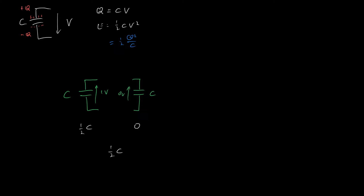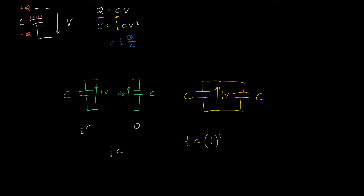Now imagine we bring these two capacitors together. The combined charge is still the same, but because we now have two capacitors sharing the same amount of charge, the voltage difference becomes half a volt. For the capacitor on the left, the energy is one half C times one half squared. For the capacitor on the right, the energy is also one half C times one half squared, which means in total I have got one quarter C.